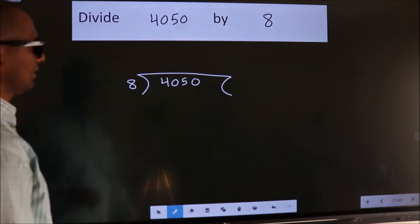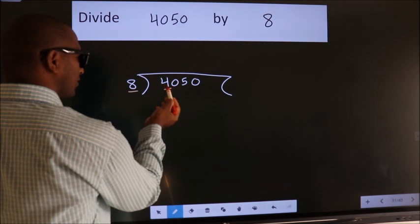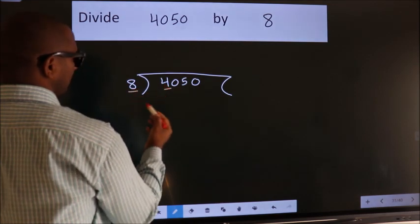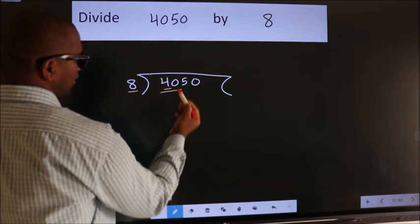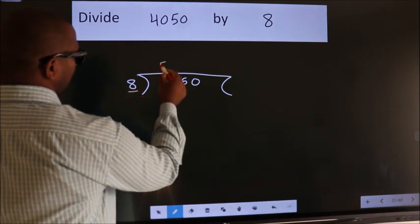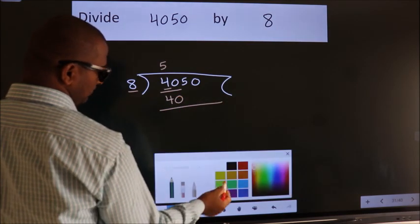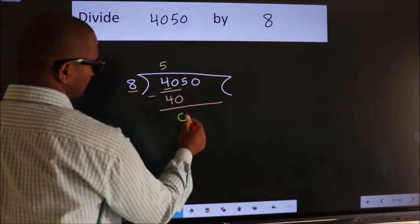Next. Here we have 4. Here 8. 4 is smaller than 8. So, we should take two numbers, 40. When do we get 40 in the 8 table? 8 fives 40. Now, we should subtract. We get 0.